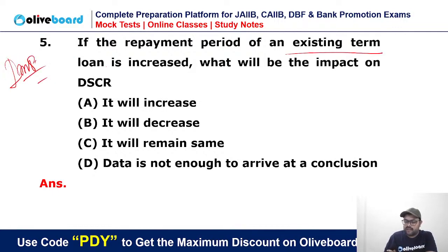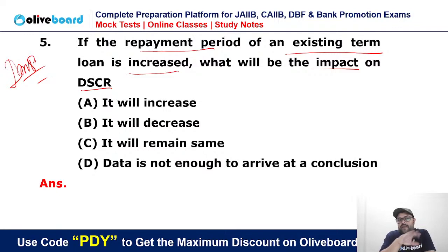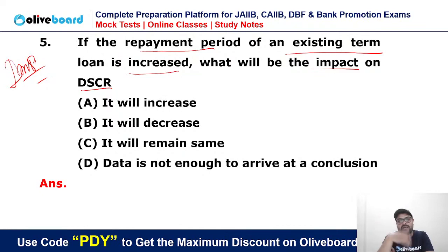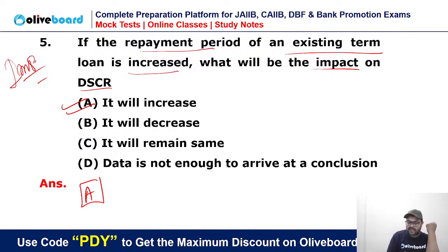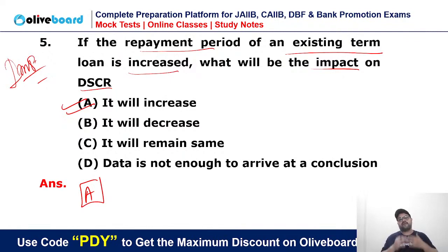If the repayment period of an existing term loan is extended, what will be the impact on the Debt Service Coverage Ratio? Suppose a loan that was to be paid in five years is now extended to seven years — what happens to DSCR? DSCR ultimately involves interest payment. If you extend the time period, the interest time period also extends. Therefore, DSCR will increase. A is the correct answer — the DSCR value will increase when the time period is increased.